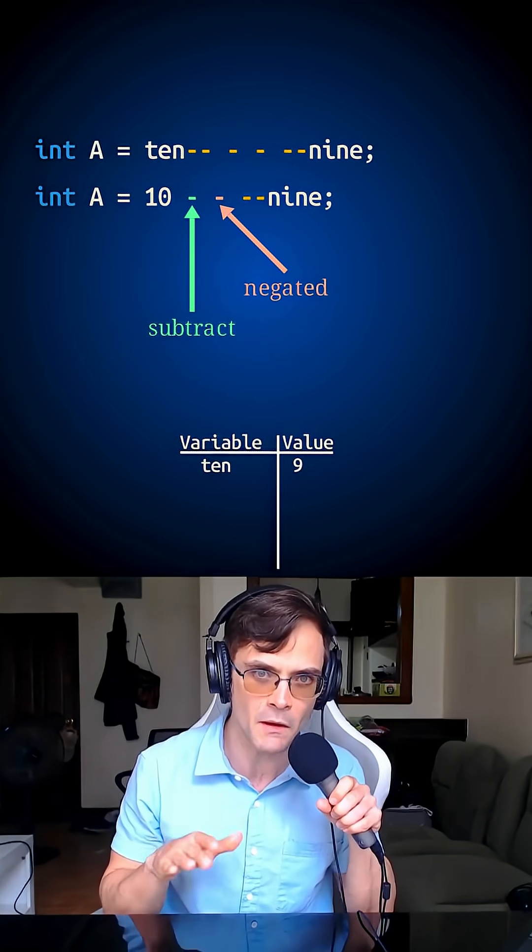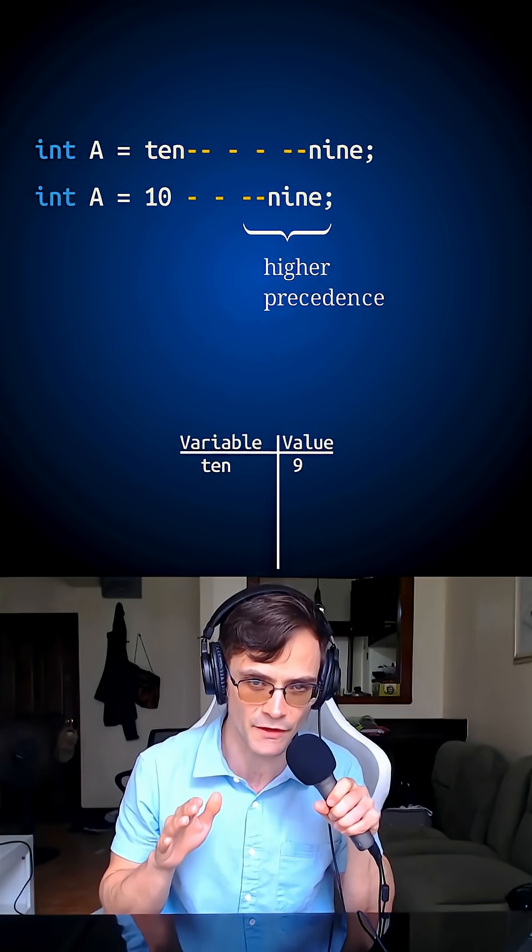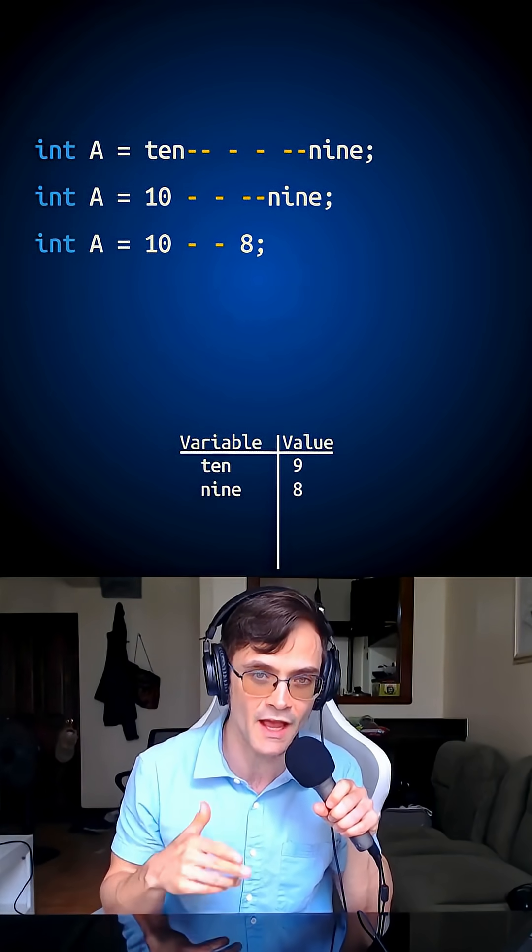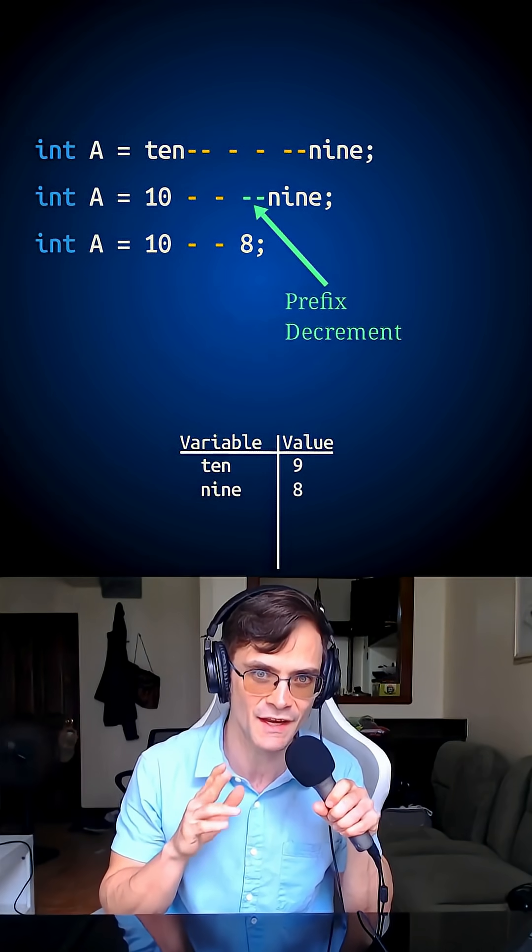So then this says I want to subtract the negated minus minus 9, and I actually process the minus minus 9 first. So 9 goes down to 8, and then I use this number 8 in the expression, and I use the 8 because this is prefix decrement, not suffix.